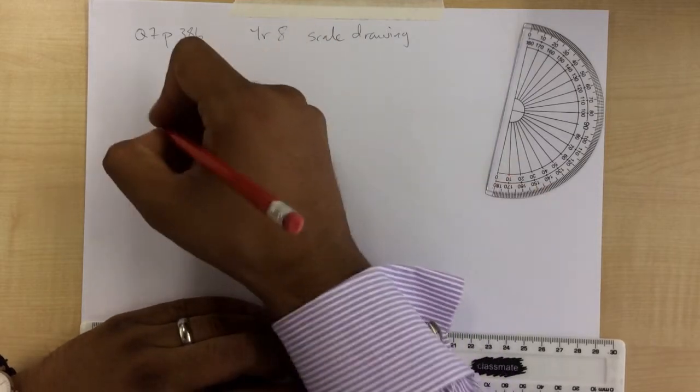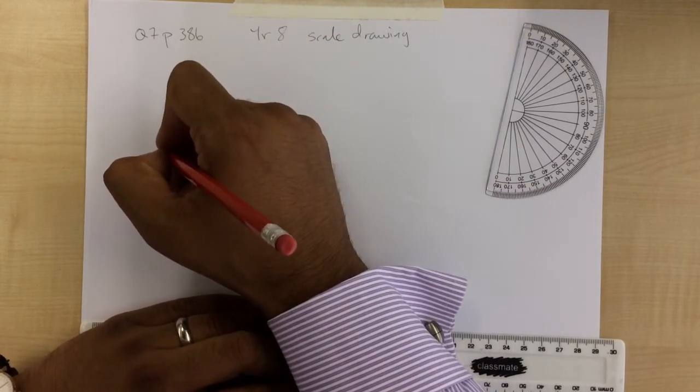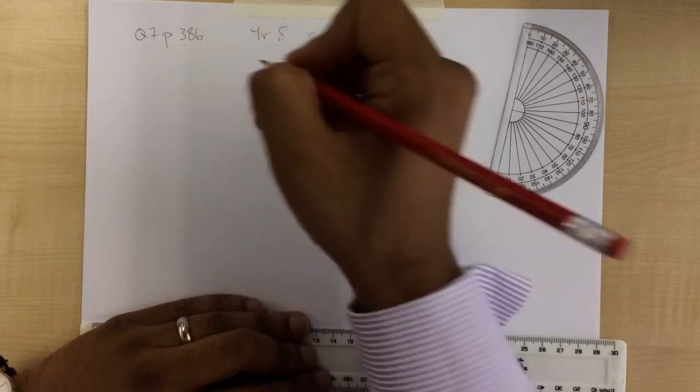We're going to be looking at an angle of depression. It says, from an aircraft flying at a height of 300 metres.